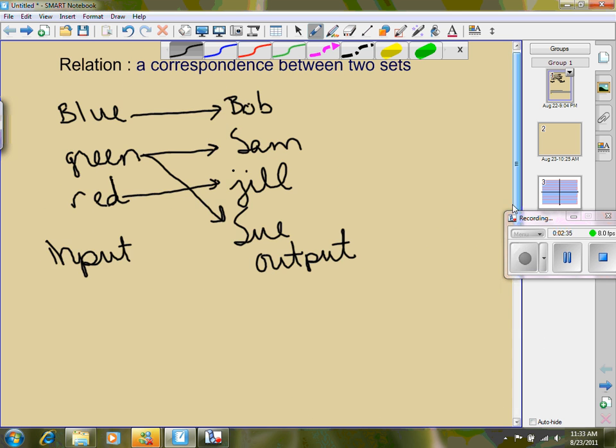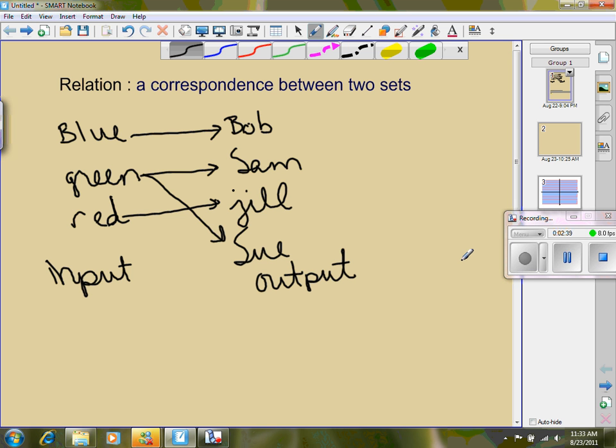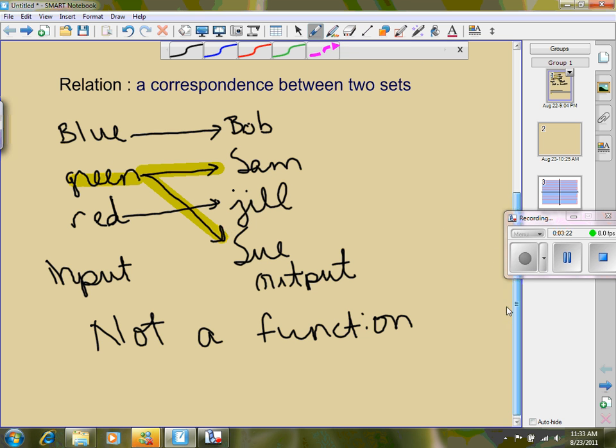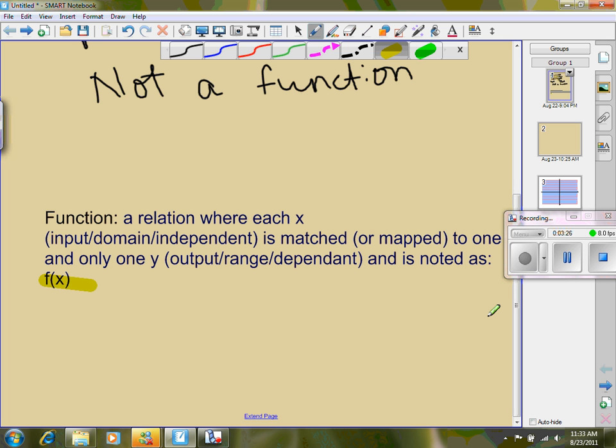Let's take a look back at our relation up here. If we consider our colors to be our inputs or our x, and the names to be the output or our y's, this is not a function. And the reason this is not a function is because right here we have green that goes to Sam and it also goes to Sue. So we have one x that goes to two different y's. For a relation to be a function, each x can be matched to one and only one y, and so we fail right there.